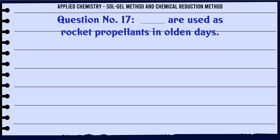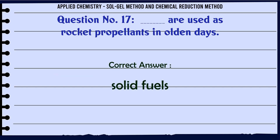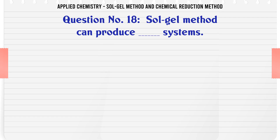Which fuel was used as rocket propellant in olden days? A. Solid fuels, B. Liquid fuels, C. Petroleum, D. Gaseous fuels. The correct answer is Solid fuels.